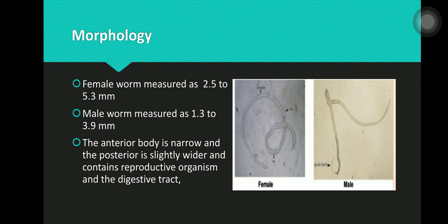Regarding morphology: the female worm measures 2.5 to 5.3 mm, and the male worm measures 1.3 to 3.9 mm. The entire body is narrow and the posterior is slightly wider, containing reproductive organs and the digestive tract. The male worm has a spicule, and the female worm has a stichosome.